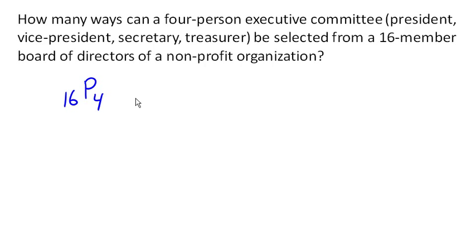Now, again, we could either compute this as 16 times 15 times 14 times 13, or 16 factorial over 16 minus 4, which is 12 factorial. Or we could pull out our calculators. Either way, we're going to end up with 43,680 different executive committees.